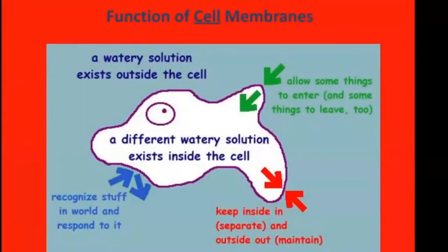The cell membrane is maintaining the boundary between the outside and inside world, controlling what goes in and out of the cell. Some stuff you don't want in, some stuff you do want in, some stuff you want to let out, some stuff you want to keep in. Since it's interacting with the environment, you might have receptors that tell it this is a good place to move toward or move away from. So this is the cell membrane.